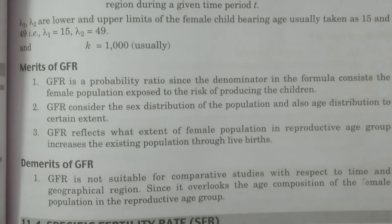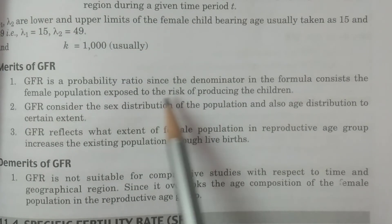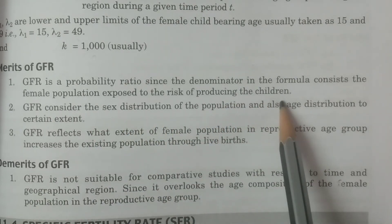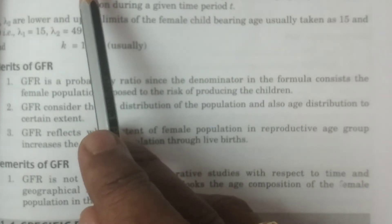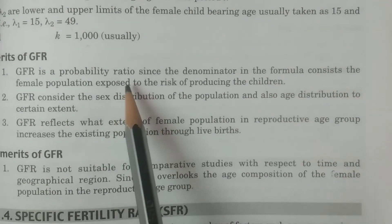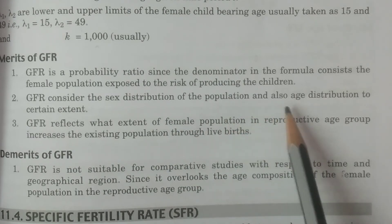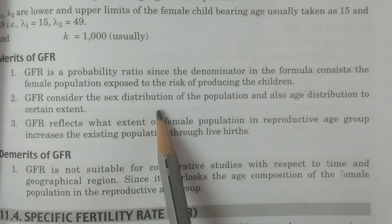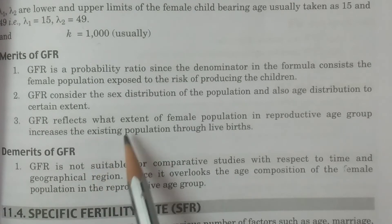Now the merits and demerits of GFR. First merit: GFR is a probability ratio, since the denominator consists of the female population exposed to the risk of producing children — the summation of FPX from λ1 to λ2. Second merit: GFR considers the sex distribution of the population, and also the age distribution to a certain extent.